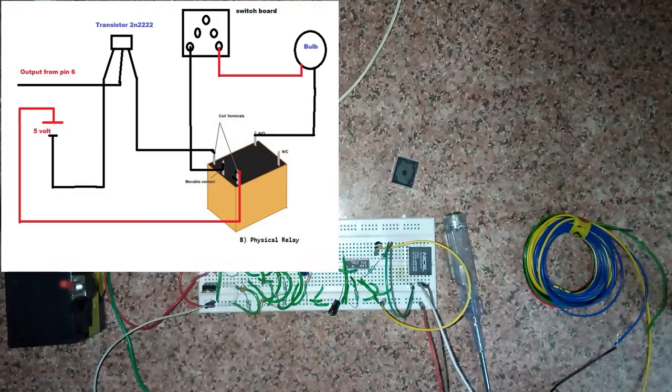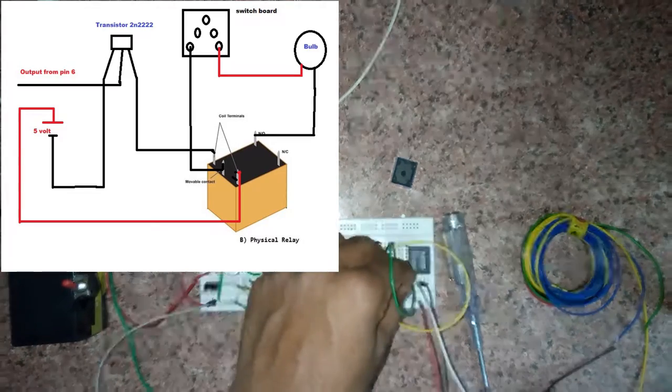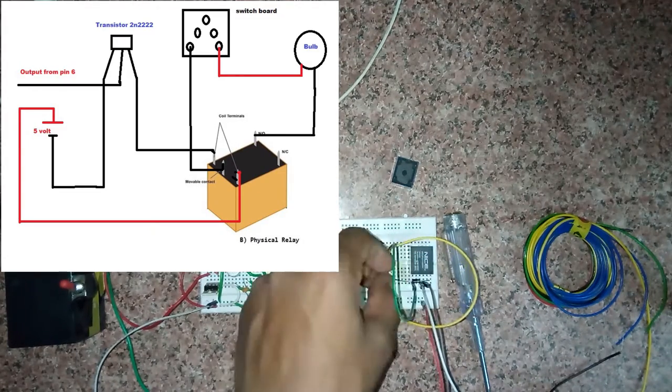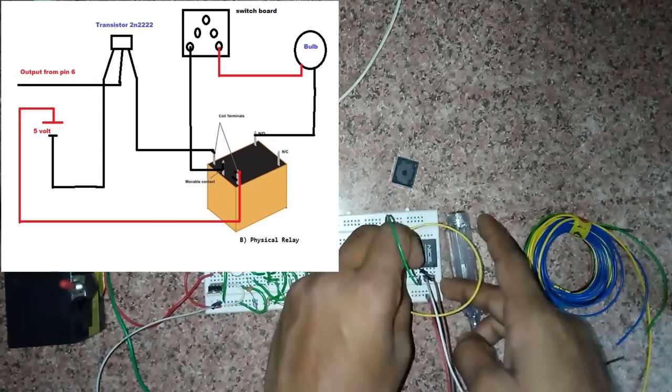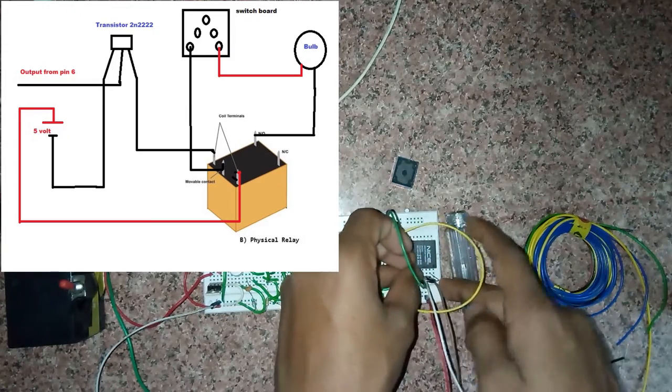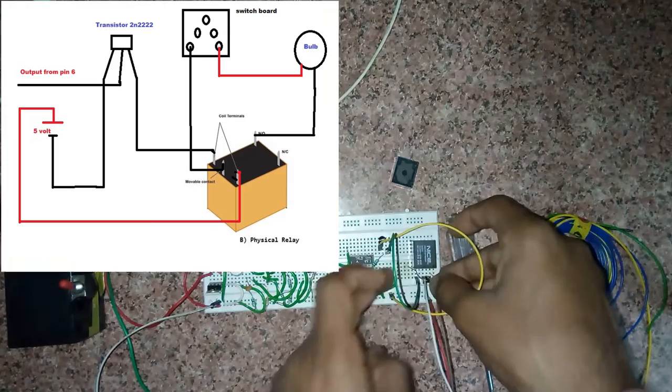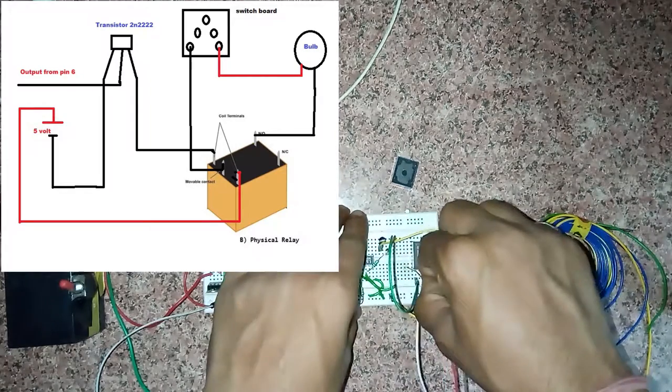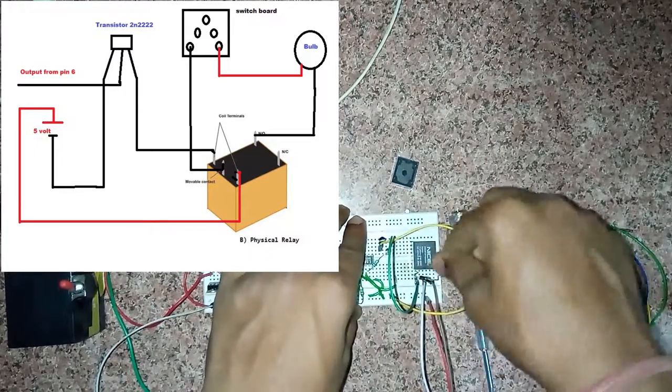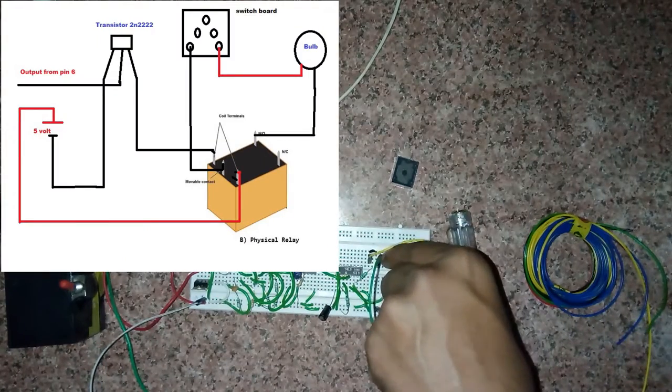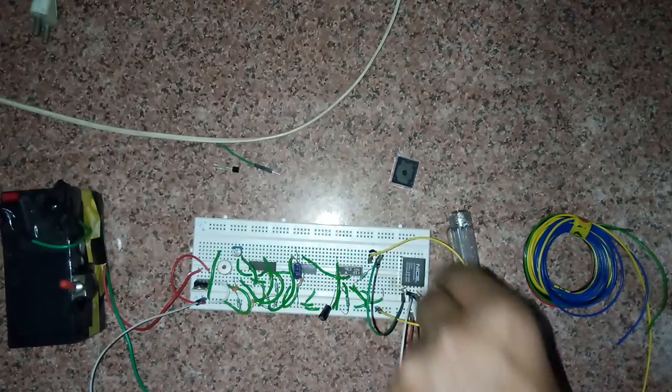The corner terminal will be connected to a 240V ground supply, which means the ground we are getting from the board. And the normal close. Normal opening will be connected to the ground of the bulb.